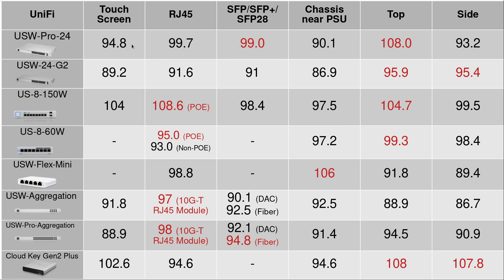I highlighted the highest temperature in red — all values are in Fahrenheit. For the pro version, as expected the SFP part and the RJ45 parts are pretty hot, but surprisingly the top of the chassis is even hotter. This switch doesn't have fans, and even though it's much more powerful than the non-pro version, that's likely why the temperature of the pro version is much higher.